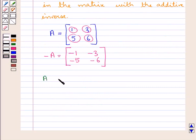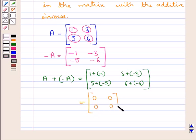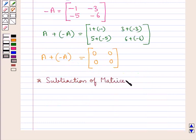The sum of a matrix and its negative is a zero matrix. That is, the result is a matrix with all elements equal to 0. So A plus minus A is equal to a zero matrix.